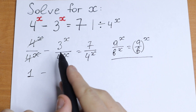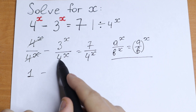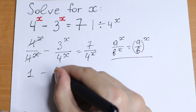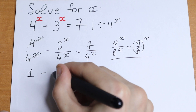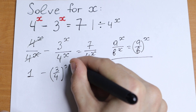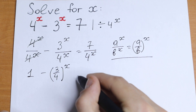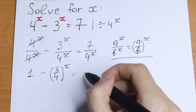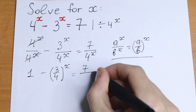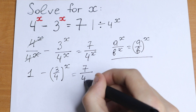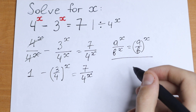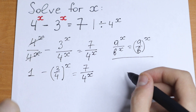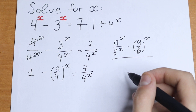Using this rule, we get 3 over 4 all raised to the power x. We cannot apply the same logic to the 7 divided by 4^x term, because there we have a constant in the numerator divided by the exponential function 4^x. So this is our equation after this simplification step: 1 minus (3/4)^x equals 7 over 4^x.